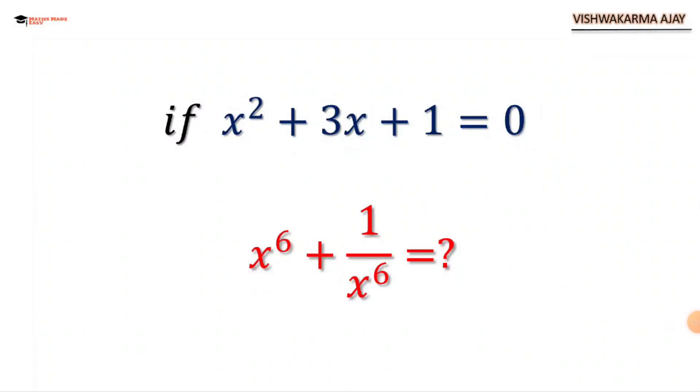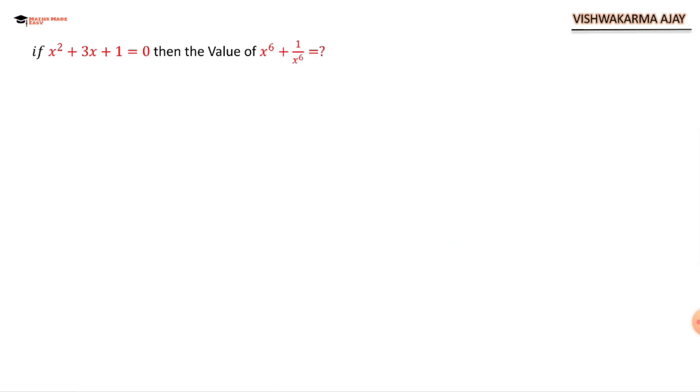Hello and welcome back to Maths Made Easy. Today we are going to solve an interesting question from Mathematics Olympiad. If x² + 3x + 1 = 0, then find the value of x⁶ + 1/x⁶.